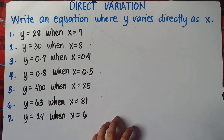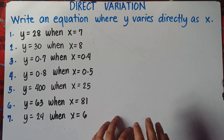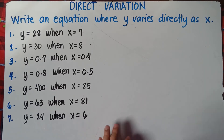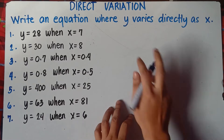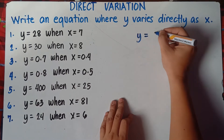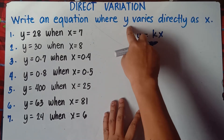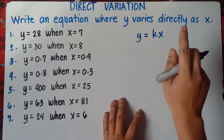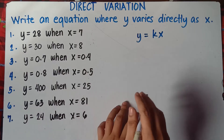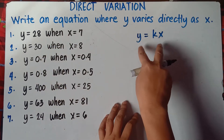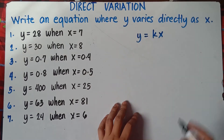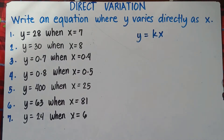So to write an equation, class, very easy — just get the value of k, and once you get the value of k, simply substitute k from the given direct variation equation. So the equation says y varies directly as x, which you can write as y equals kx. Simply substitute the value of y and x into this equation to get the value of k, and once you get k, substitute k back into the equation and that's the answer.